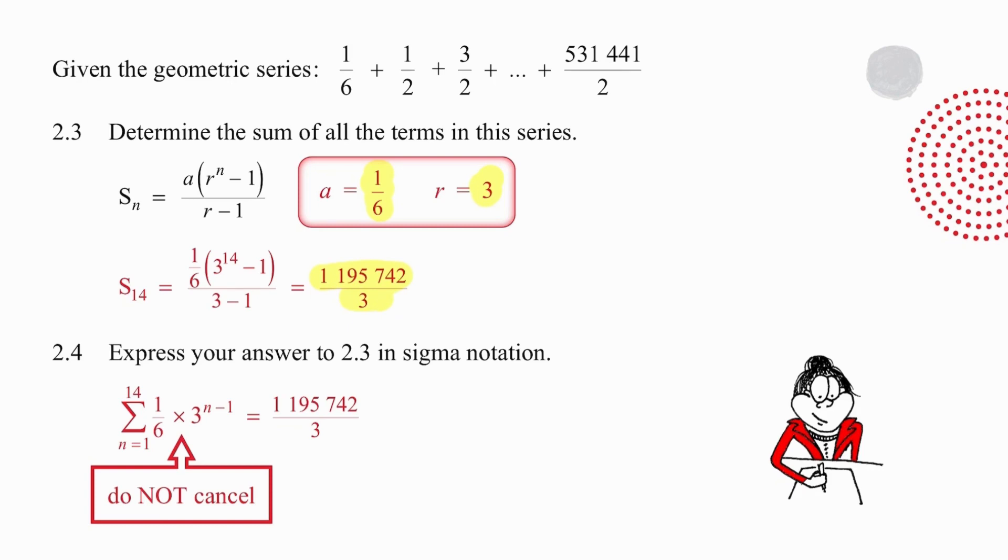Finally, we need to write this into sigma notation. We are not going to make the mistake of multiplying those. We're going to keep them separate. Remember that you have to give the start and end value of substitution. And we know that we have 14 terms. And in this case, because we know the result, we are going to set up our sigma statement and give the answer because we worked it out in 2.3.